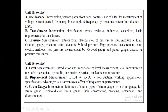The syllabus of Unit 5 covers: oscilloscope introduction, various parts, front panel controls, use of CRO for measurement of voltage, current, period, frequency, phase angle, and frequency by Lissajous pattern. Introduction to digital storage oscilloscope. Then transducers: introduction, classification types — resistive, inductive, capacitive — and basic requirements of transducers. Also, pressure measurement using various transducers.